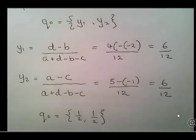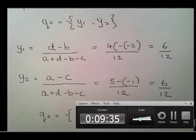That is the full answer. Y1 is 6/12 and Y2 is 6/12 — so it's a half and a half for the Column Player's optimal strategy.